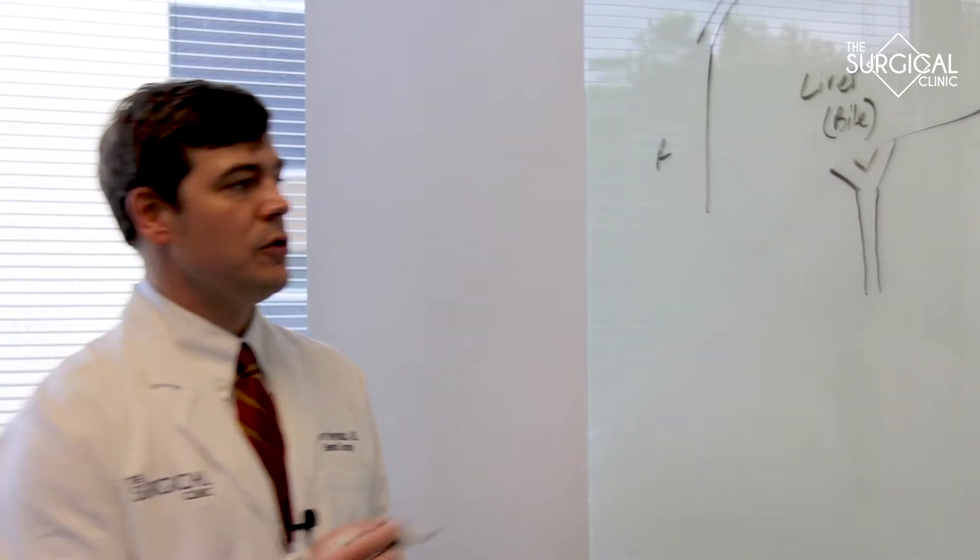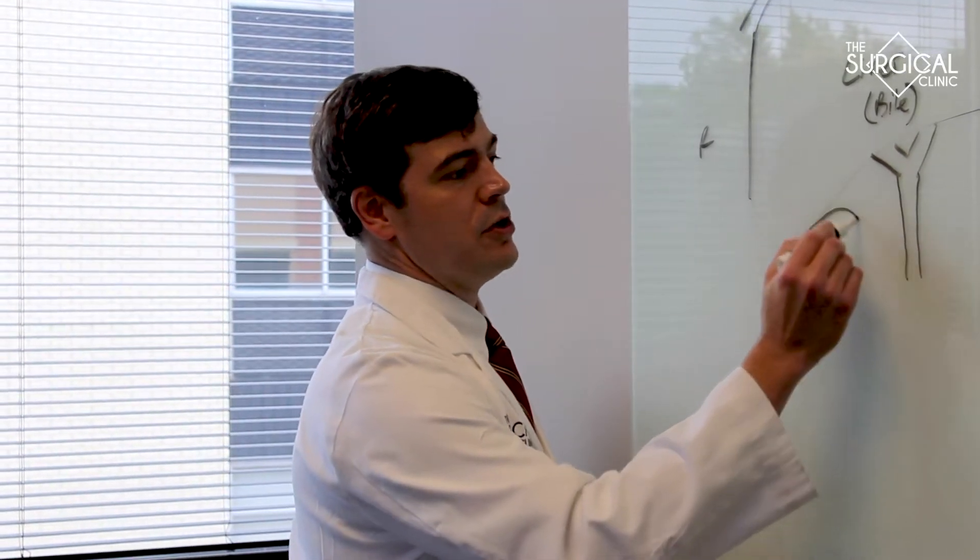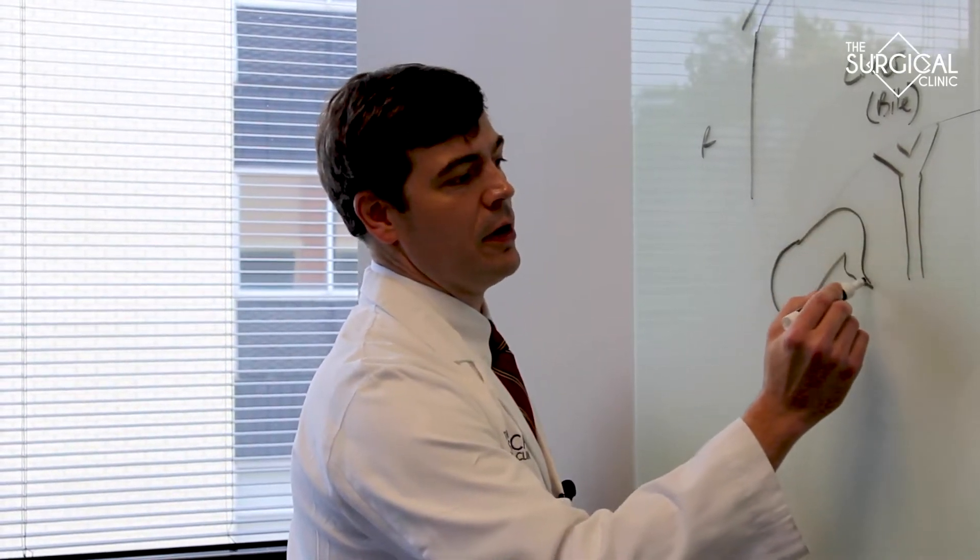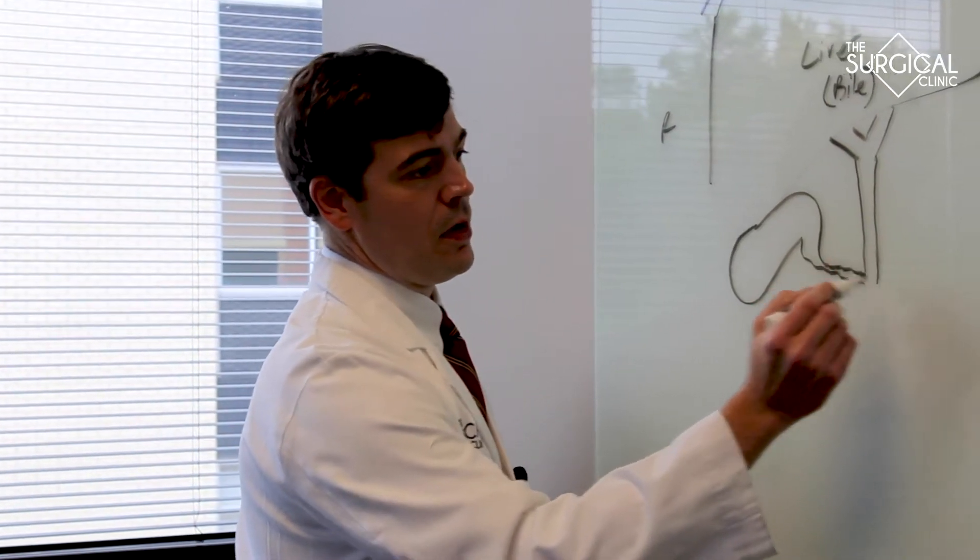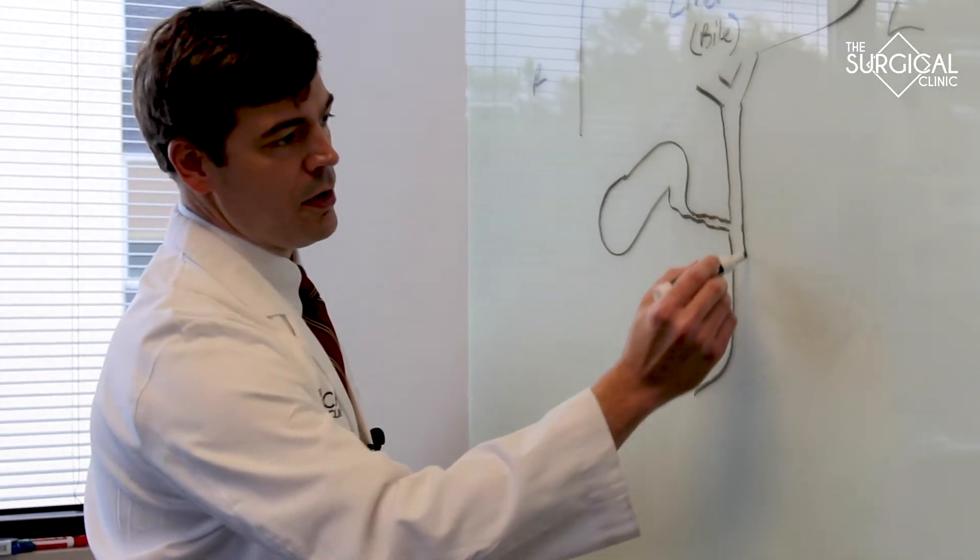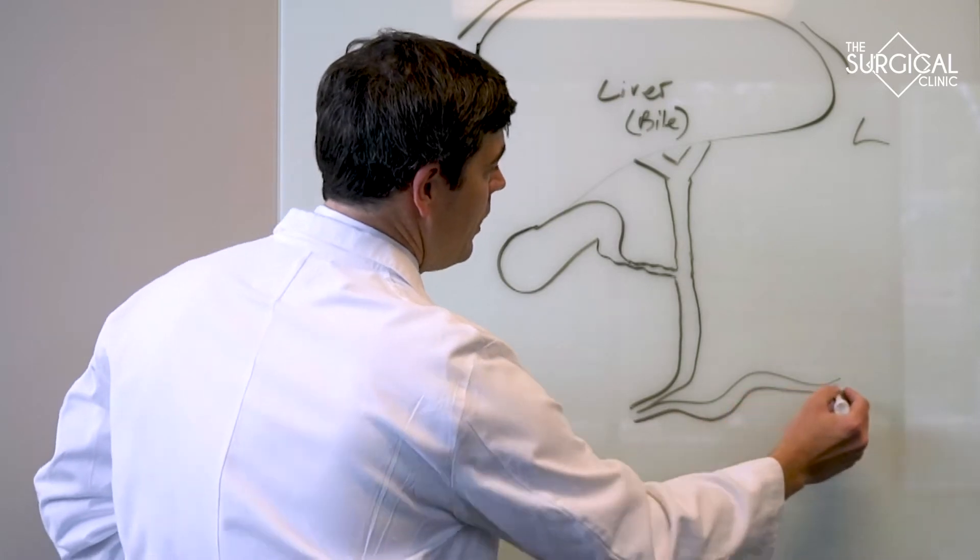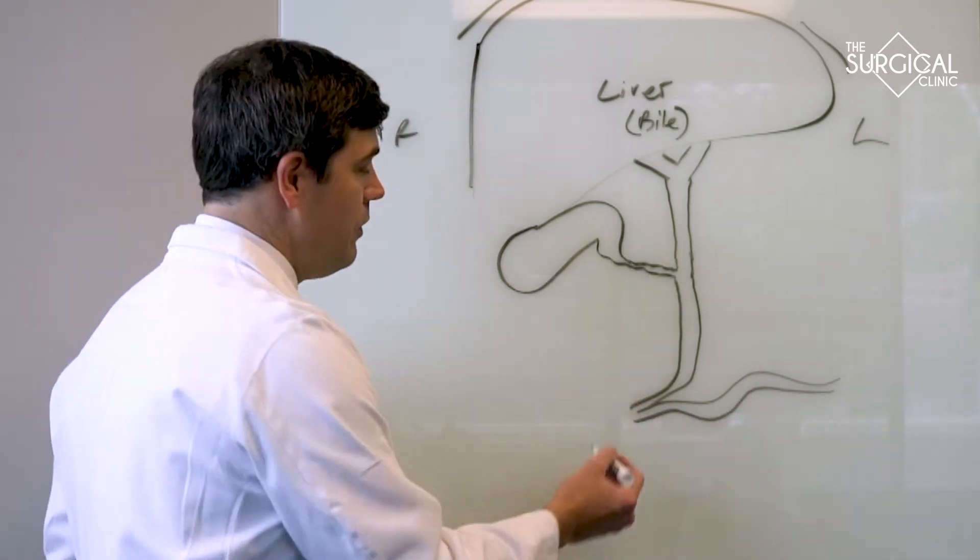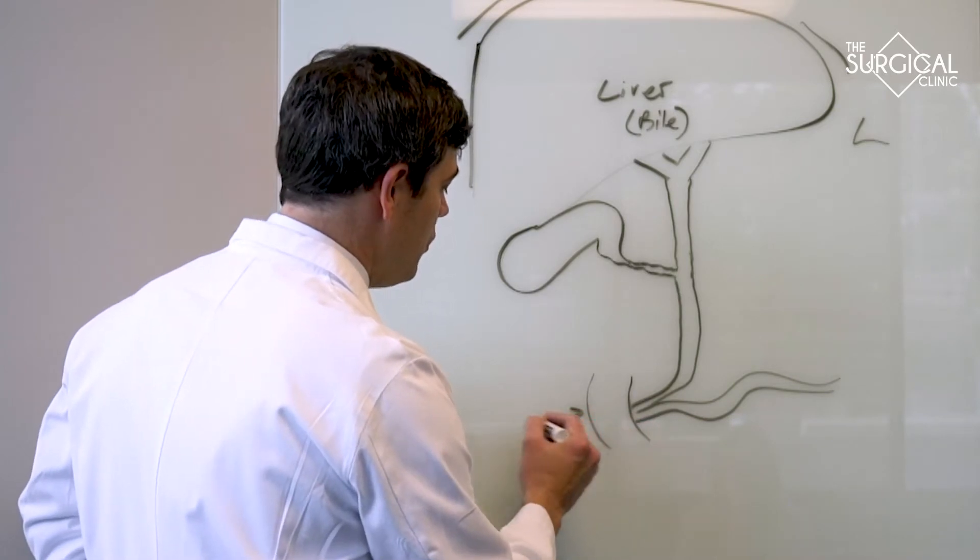And the gallbladder is a little storage sack that sits right here up underneath the right lobe of the liver. It's kind of shaped like this and it has a little duct that comes out of it that comes over here and meets up with the main bile duct. Then the main bile duct comes all the way down like this and eventually it meets up with the pancreatic duct. And the pancreatic duct and the main bile duct come together to form this common channel that dumps into the first part of your small intestine right here which is called the duodenum.